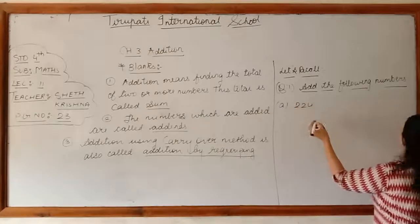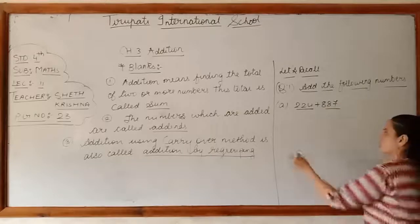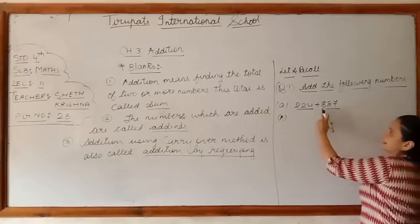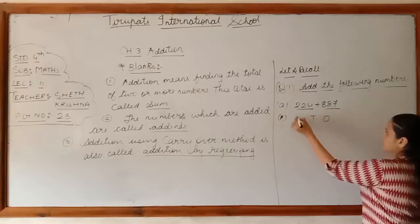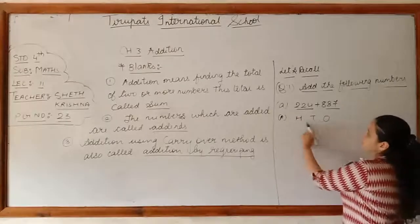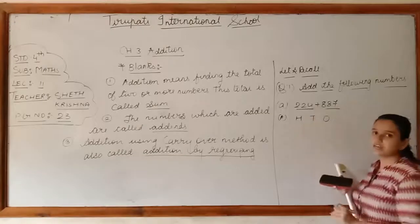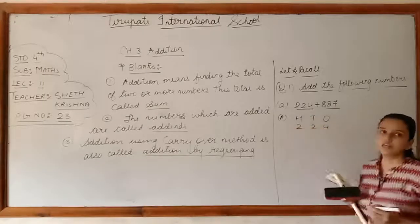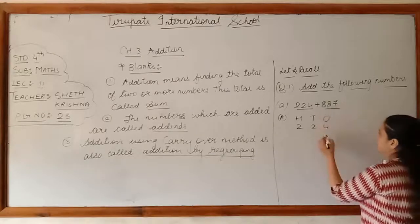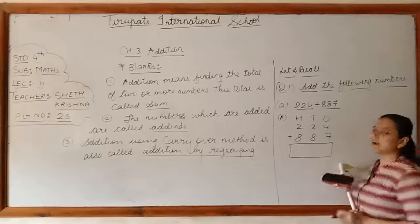First one: 224 plus 887. Here there are three digits in each number. Before adding, we label the place values: ones, tens, and hundreds. In fourth standard you have to mention ones, tens, hundreds, thousands, and ten thousands. The digits are: 4, 2, 2 and 7, 8, 8. You have to add them and write the answer yourself.